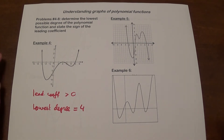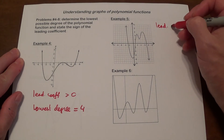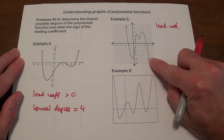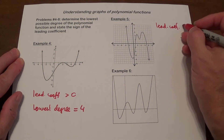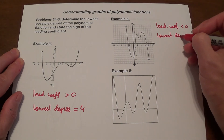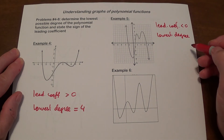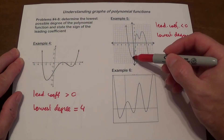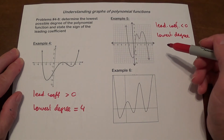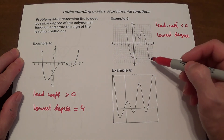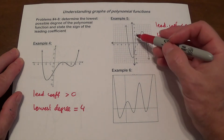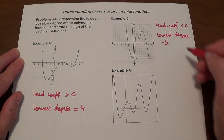Example 5: the leading coefficient is determined by what's happening on the right-hand side. The right-hand side goes down, so the leading coefficient is negative. For the lowest degree, we count the turning points: 1, 2, 3, 4. That means the lowest degree is at least 5. Is it consistent with the shape? One end goes up and one end goes down, so the degree has to be odd. Our lowest degree here is 5.